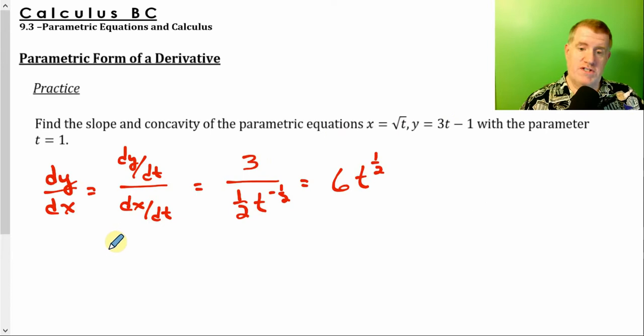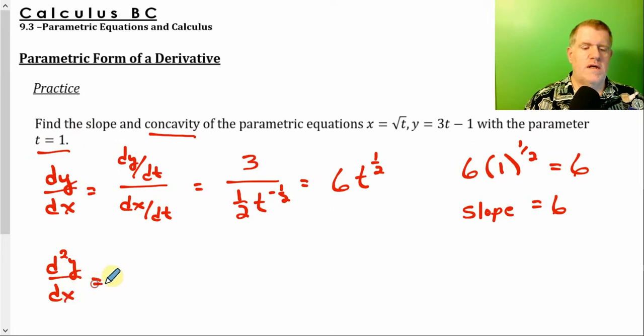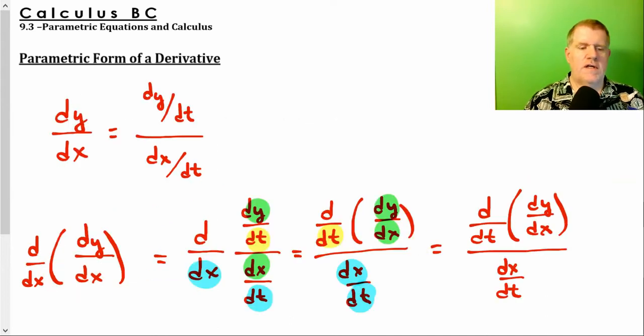In this particular case, we have to find the slope when t is 1. So if I evaluate this at 1, I get 6. So the slope is 6 when t equals 1. Now concavity, we're going to need a second derivative. Alright. So to find a second derivative, remember this is what we do. Okay, we're going to take the derivative of this. What's the derivative of 6t to the 1 half power? Well, it's 1 half 6t to the negative 1 half.